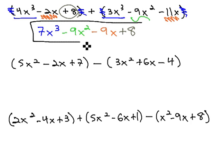We have now added these polynomials together, giving us 7x³ minus 9x² minus 9x plus 8.